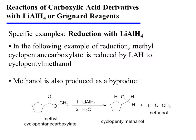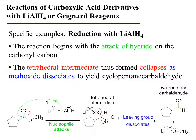On this slide, we see a specific example of the reduction of an ester with lithium aluminum hydride. Methyl cyclopentane carboxylate is reduced by lithium aluminum hydride to cyclopentyl methanol; methanol is also produced as a byproduct. The reaction begins with the attack of hydride on the carbonyl carbon. Pi electrons are displaced onto oxygen as a result, and a tetrahedral intermediate is formed. This tetrahedral intermediate collapses as methoxide dissociates from the substrate, yielding cyclopentane carbaldehyde as an intermediate in the reaction.